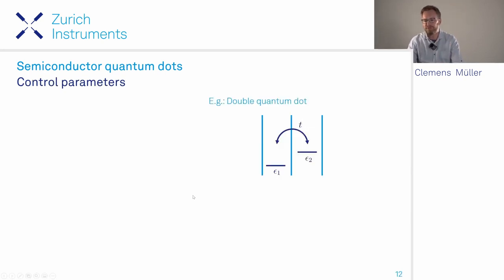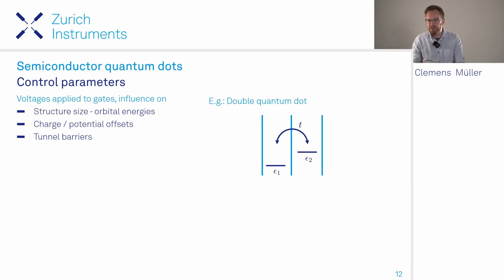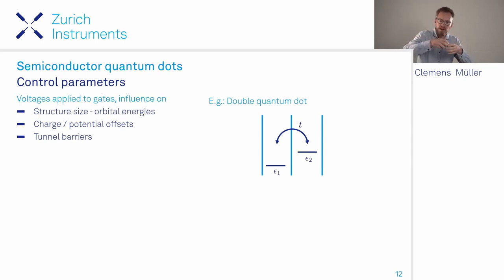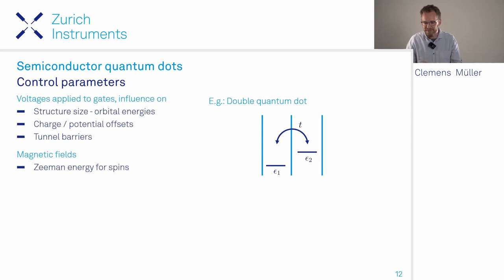The control parameters include gate voltages that control confinement potential size, orbital energies, potential offsets, and tunnel barriers between adjacent quantum dots. For spin-based qubits, magnetic fields can be applied to give an energy difference between spin states via Zeeman splitting. For a simple double quantum dot, writing the Hamiltonian gives two on-site energy terms and a tunneling term, each controlled by gate voltages.